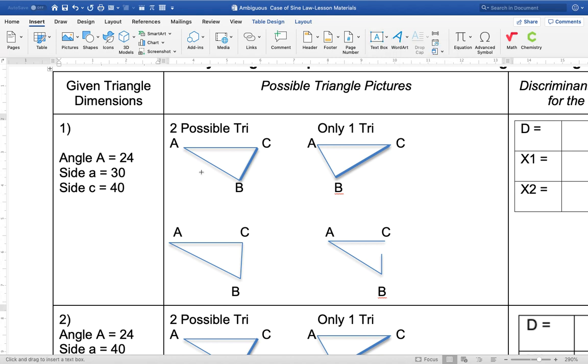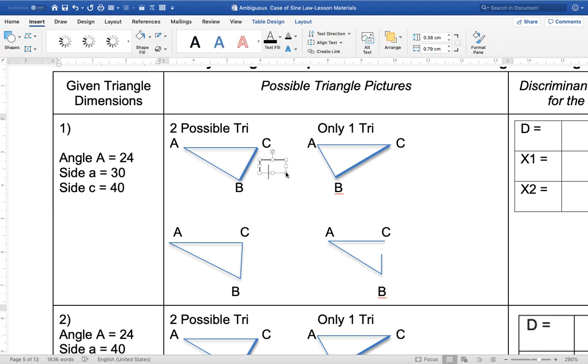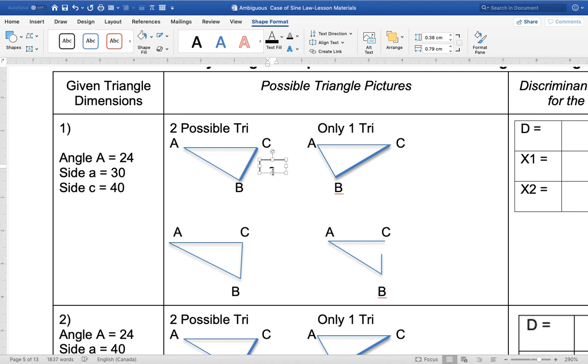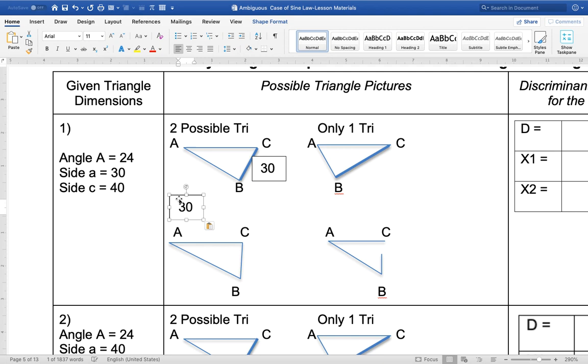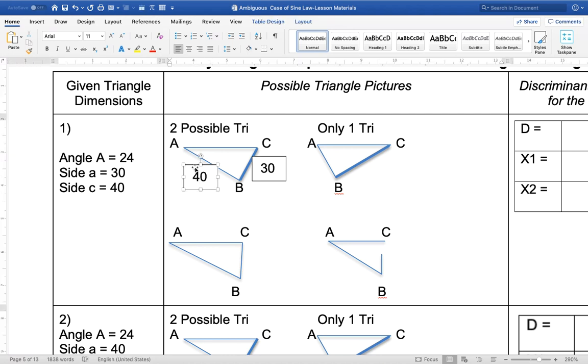So I'm going to insert some text boxes here just to get some numbers. So we know that angle A is 24. We know the angle up here where my mouse is right now is 24. We know that side A right here is 30. So side A is 30. And then we know that side C is 40. So side C is 40.